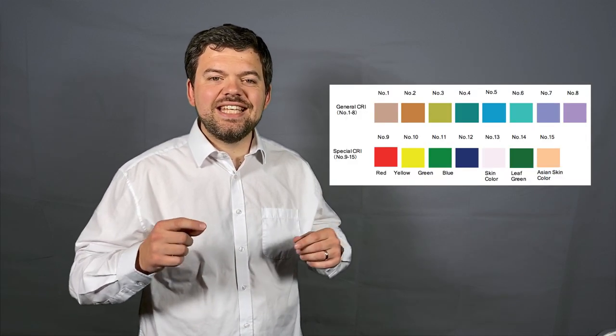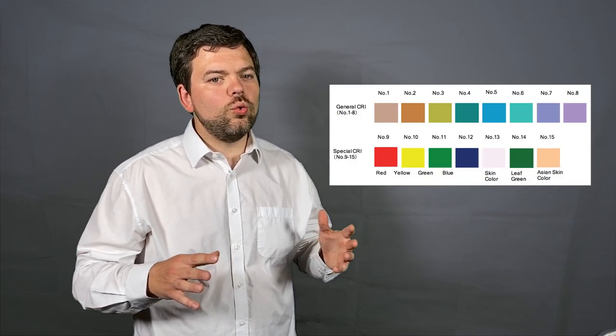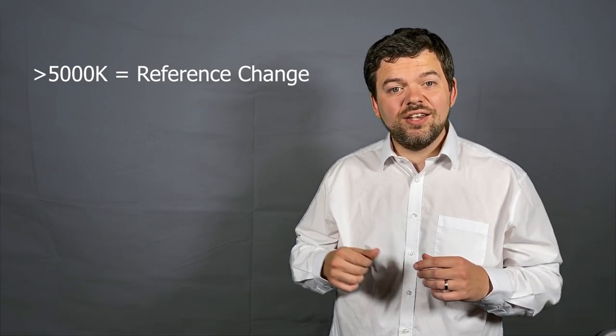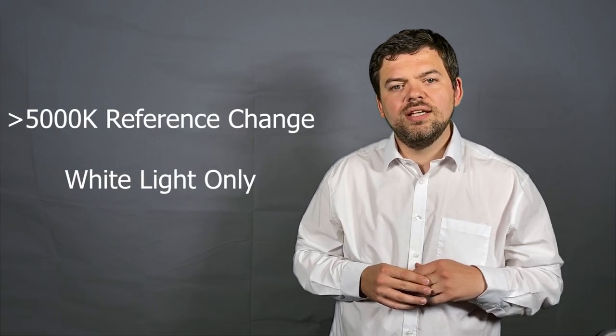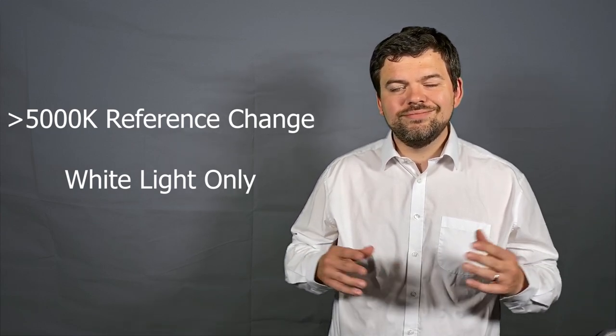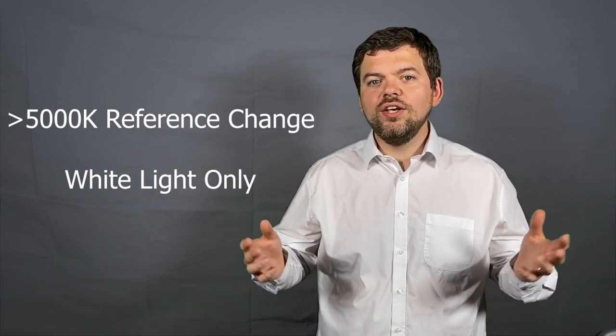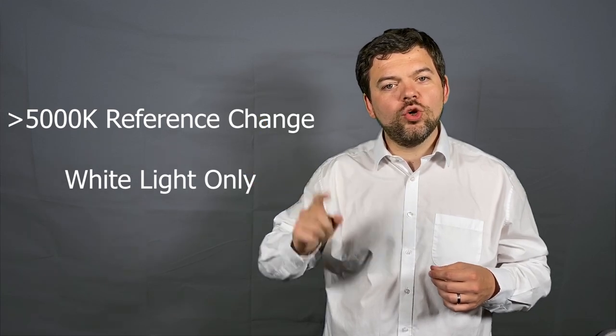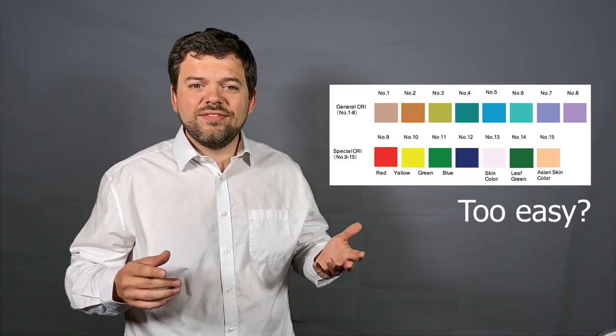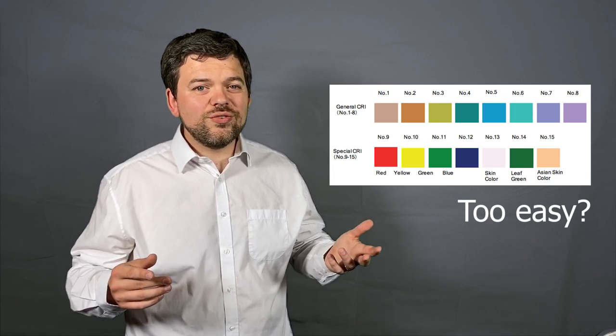However even this extended CRI measurement does not cover all the bases. The measurements need to be altered above 5000 Kelvin to use the daylight reference D65. CRI only truly works for white light with a specific color temperature. Not particularly useful for colored light or light when it's very warm or very cool. Many even suggest that the sample colors are not saturated enough for manufacturers to struggle rendering them.